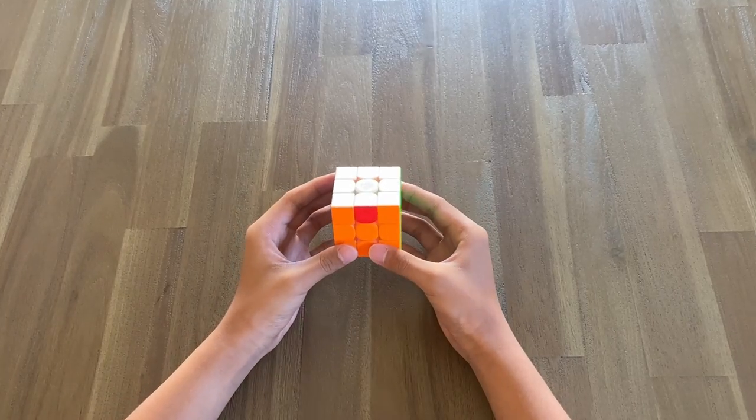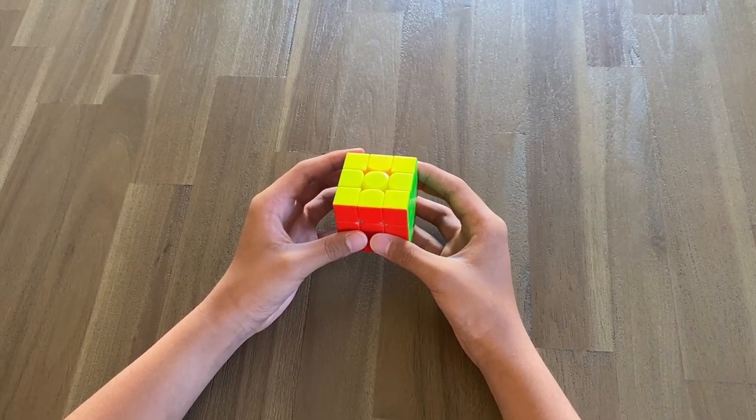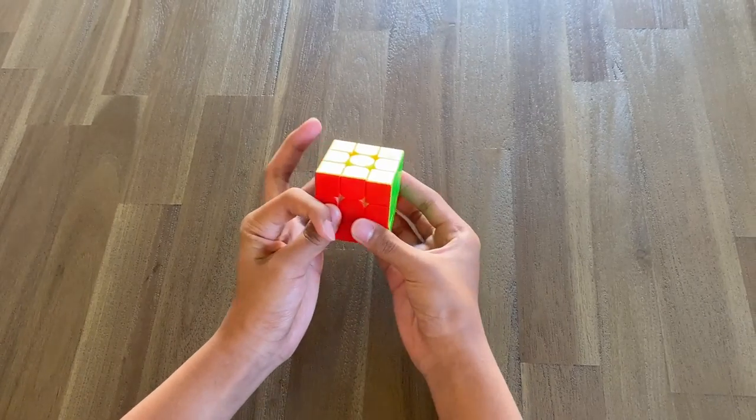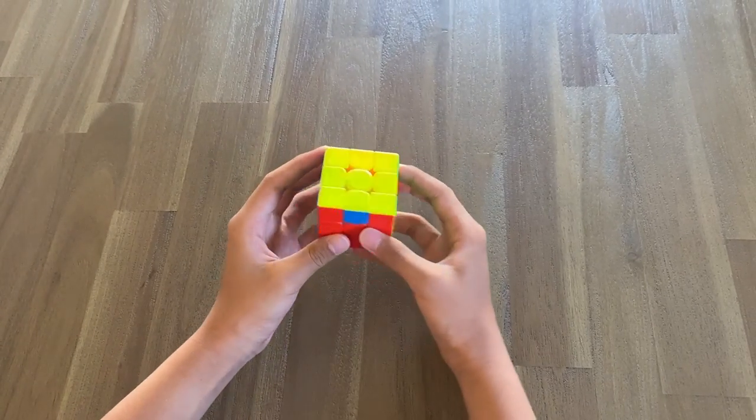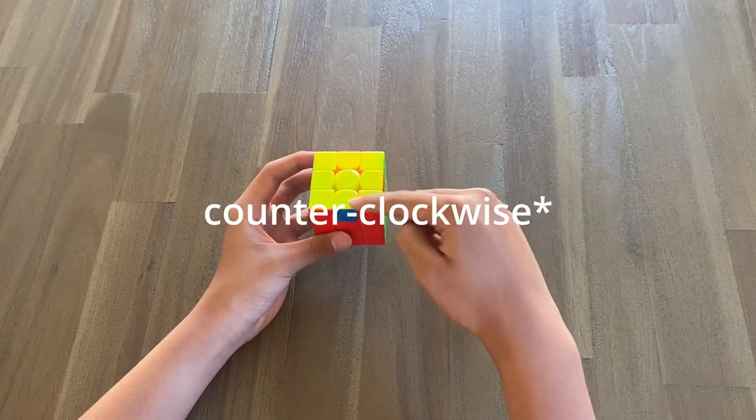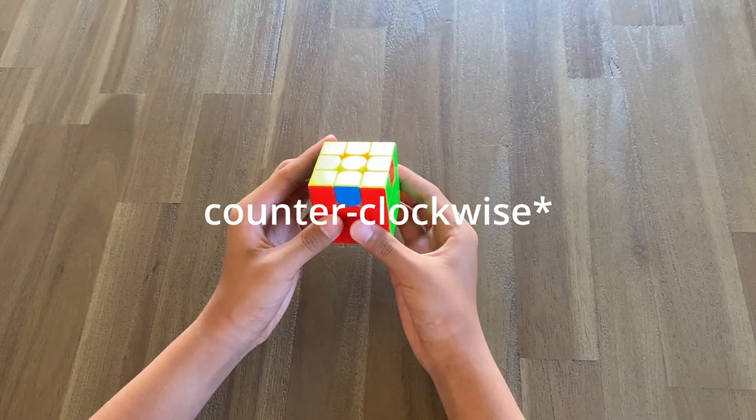Now, let me give you an example with a U perm. Similarly, we can use a U perm as such. I'm going to be using this U perm. As you can see, we've swapped these three edges in a clockwise cycle. Let me restore to solid state.